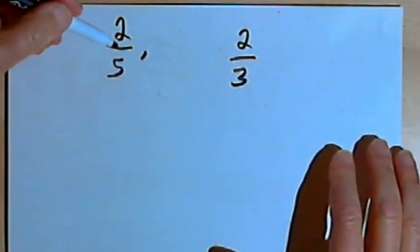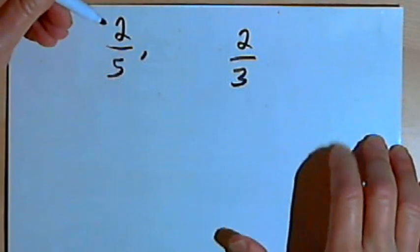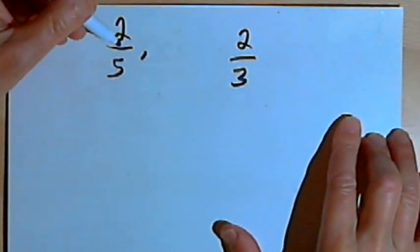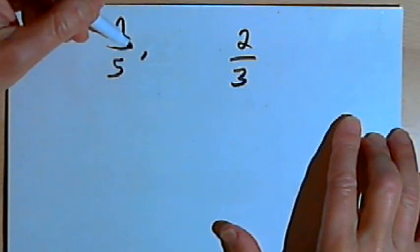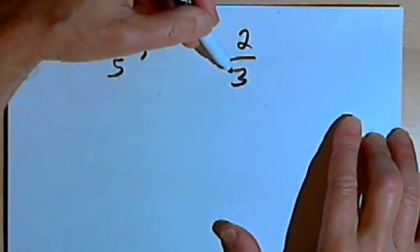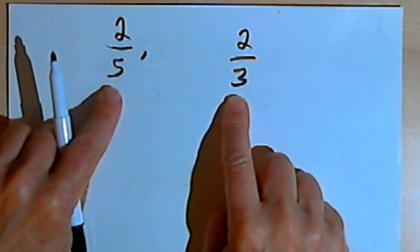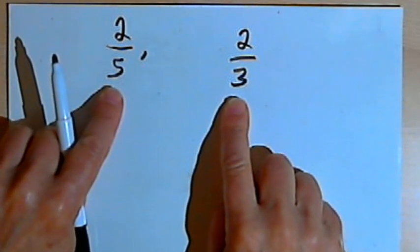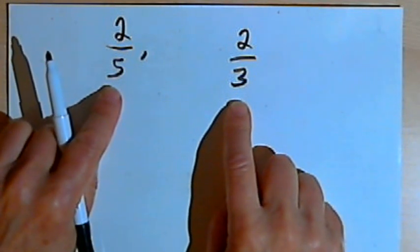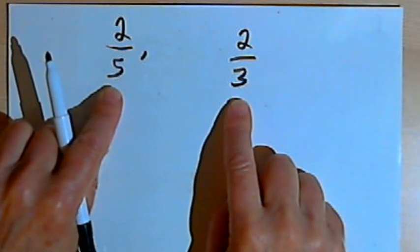Here I've got two fractions, 2 over 5 and 2 over 3. Let's say I'm told to find three rational numbers that are in between the values of 2 over 5 and 2 over 3. So here's how we're going to do it. I'm going to give both fractions the same denominator. Since the denominators are 5 and 3, a common denominator would be 15.